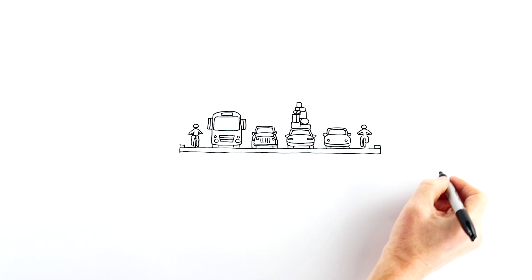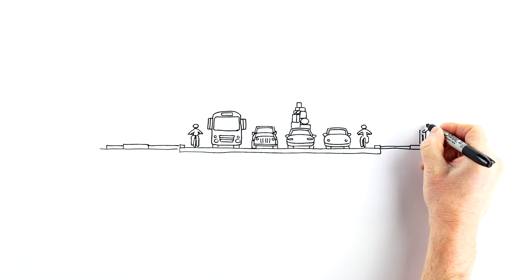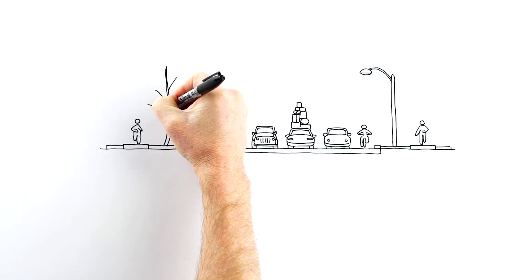City streets are more than just a road. Above ground, there are bike lanes, sidewalks, curbs, gutters, lighting, landscaping.